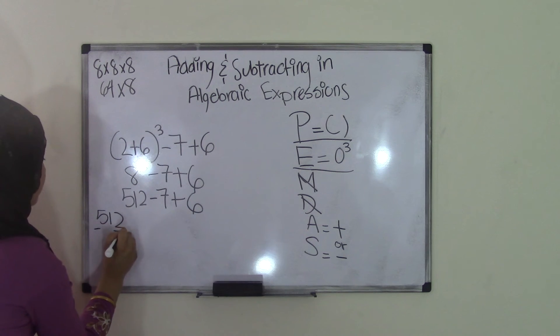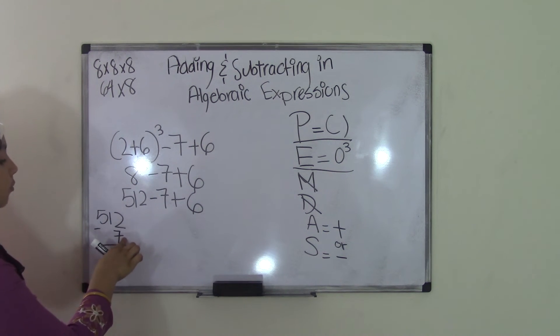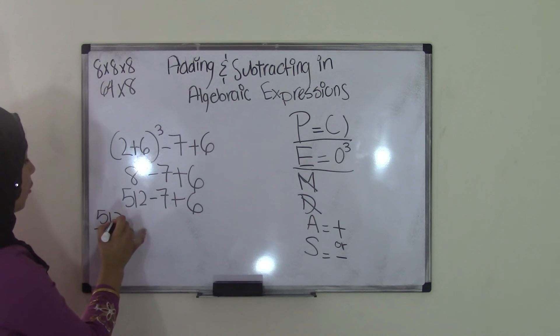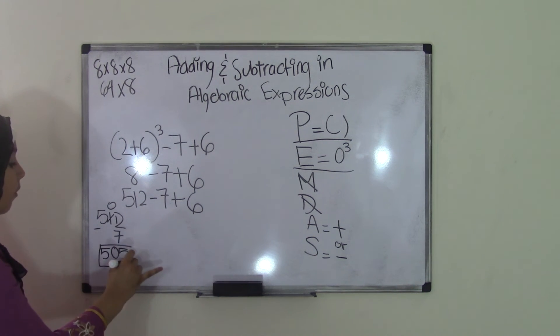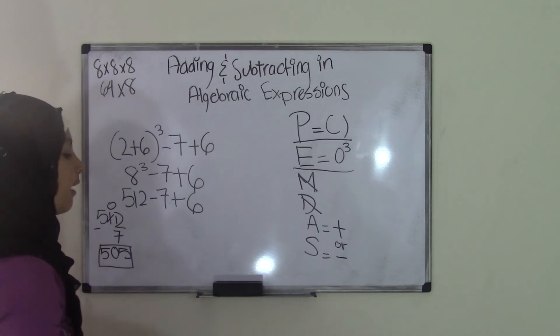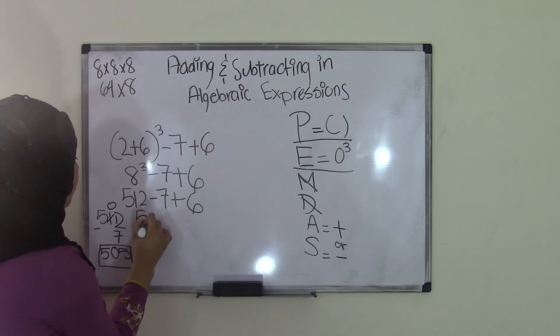512 minus 7. We can't subtract 7 from 2, so we're going to have to borrow 1 and make that a 12, and the 1 now becomes a 0. And 12 minus 7 we know is 5, and bring down the 0 and the other 5. So now we have our difference of 505, so this becomes 505 plus 6.